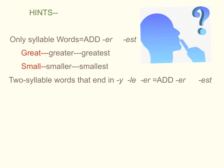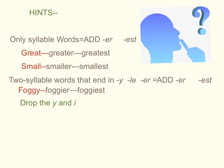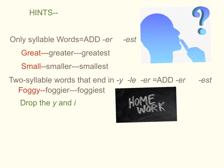Two-syllable words that end in -y, -le, and -er, you often add just -er and -est. Example: foggy, foggier, foggiest. And you can see that the y was dropped for foggier and foggiest, and you add an i. Remember to bring your completed notebook to class in order to receive credit for your work.